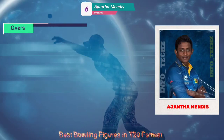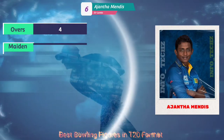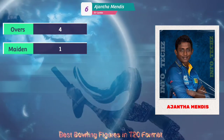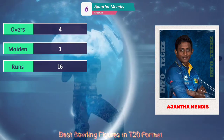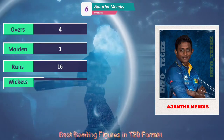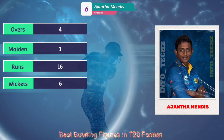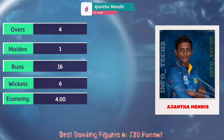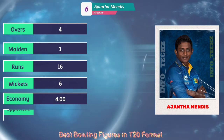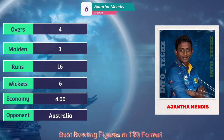At number six, Agenda Mendes, a Sri Lankan mystery spinner. She bowled four overs, one maiden, 16 runs, six wickets, with an economy of four runs per over. The opponent was Australia.